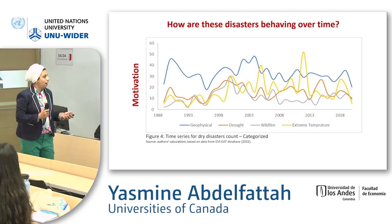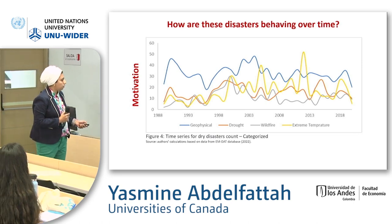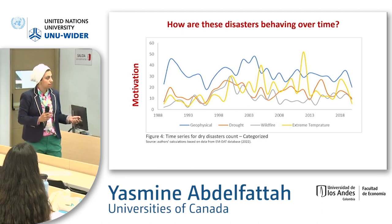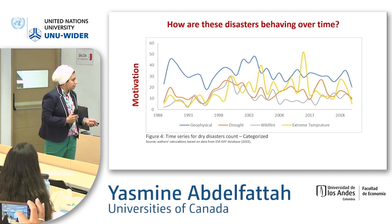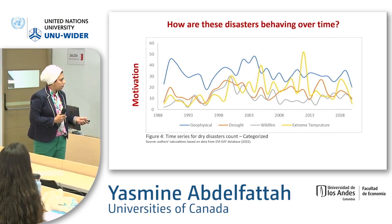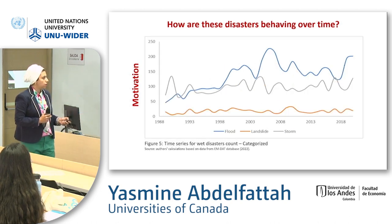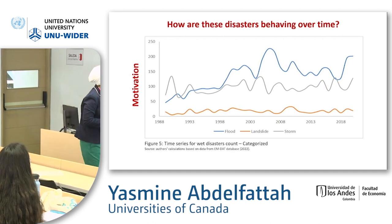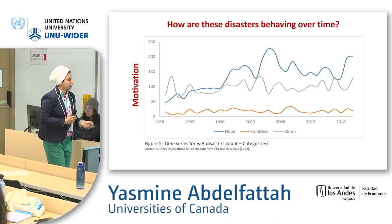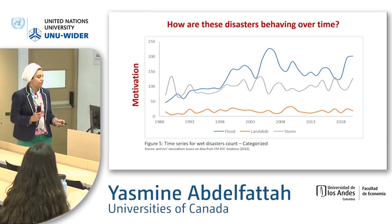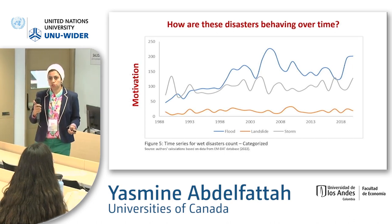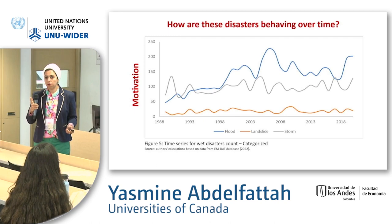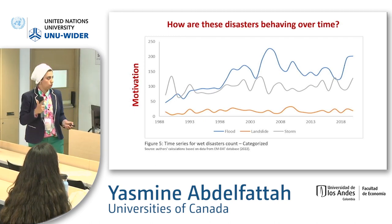If we divide disasters into dry and wet categories: the dry ones — extreme temperature and drought — are fluctuating but moving up. Moving to wet disasters, look at this: floods and storms show an increasing trend throughout the years. And remember, floods already had very high frequency and number of people affected. That is very alarming.